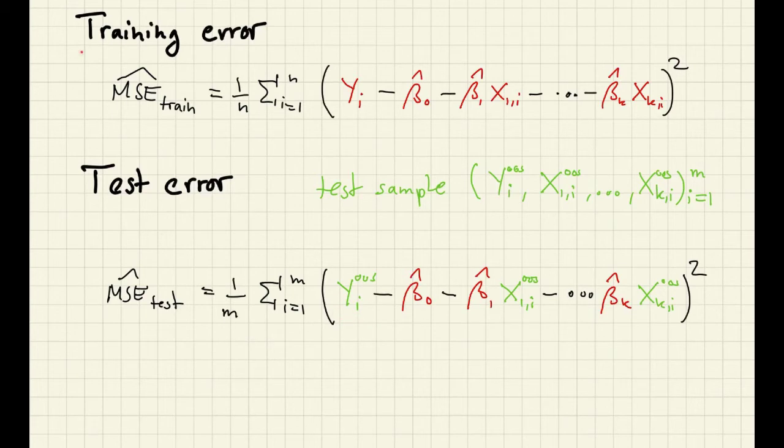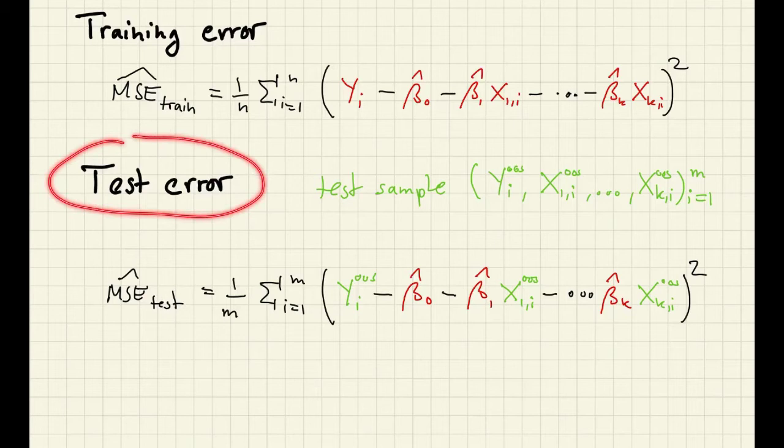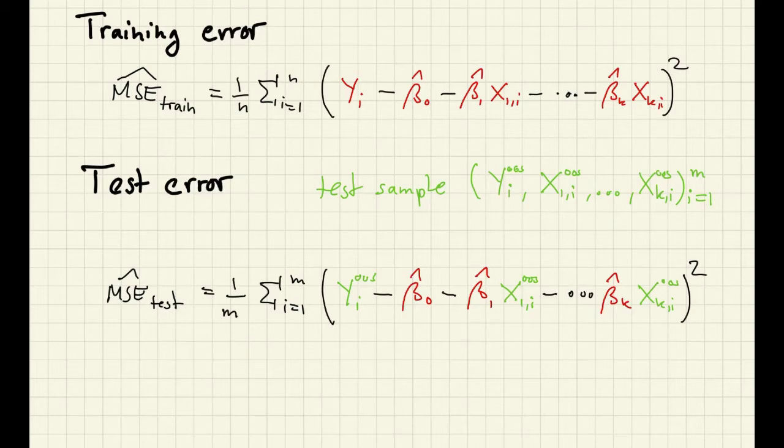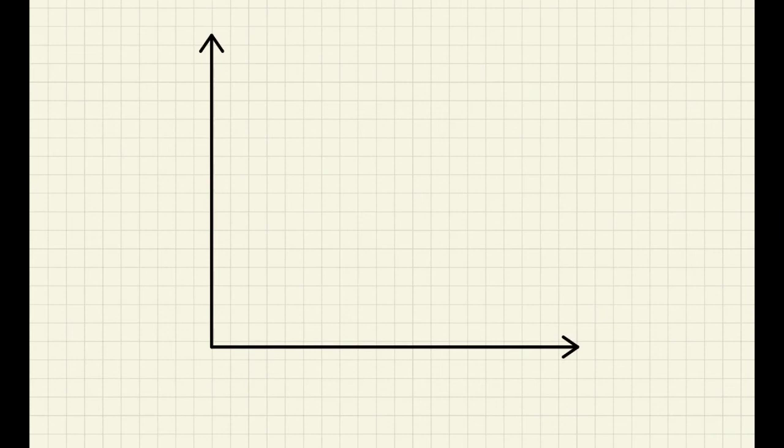We now discuss how training error and test error compare, and it will turn out that training error is actually not a very good way of measuring prediction error, but test error is. So why do we want to measure prediction error? Because we want to choose a predictive model with a low prediction error. So we want our measurement of prediction error to guide our model choice. And so what kind of models can we choose? We can choose to have less features giving us a simple model, or more features giving us a more complex model. So we could have models of different complexity.